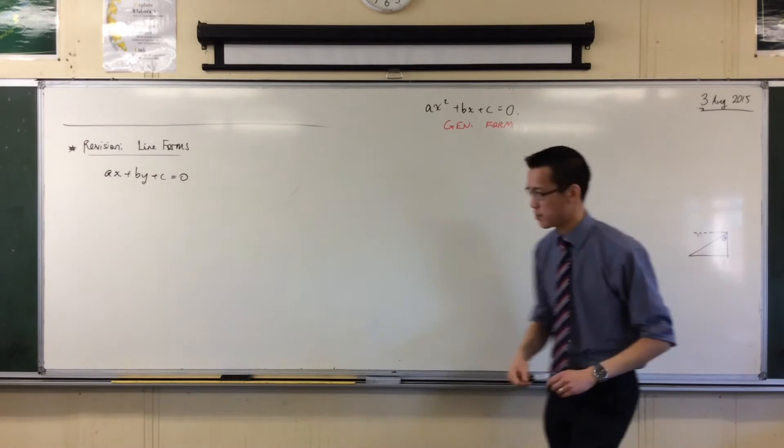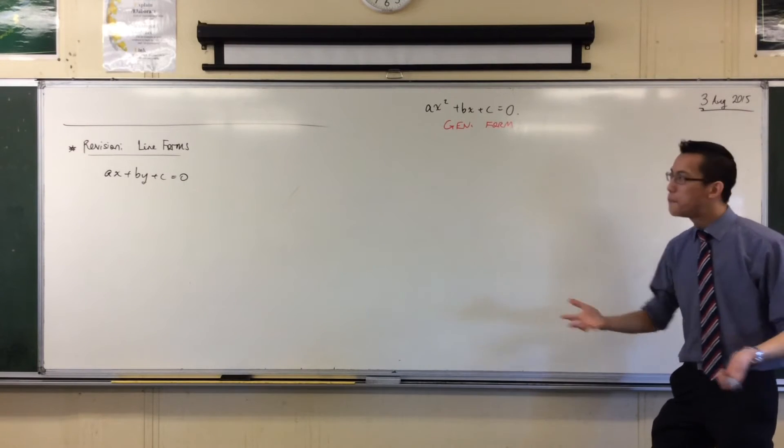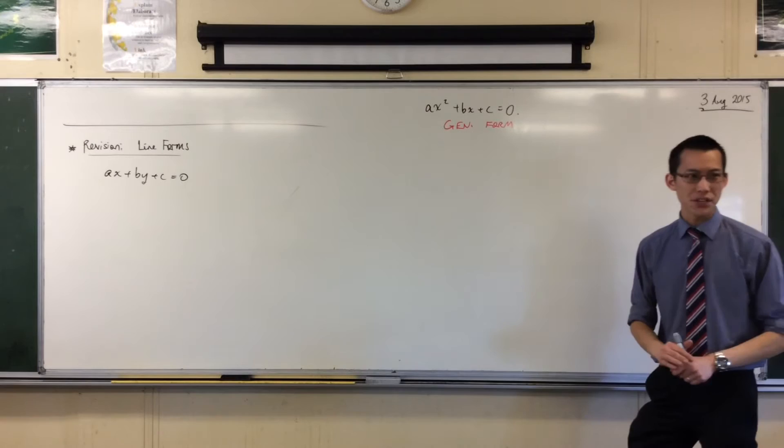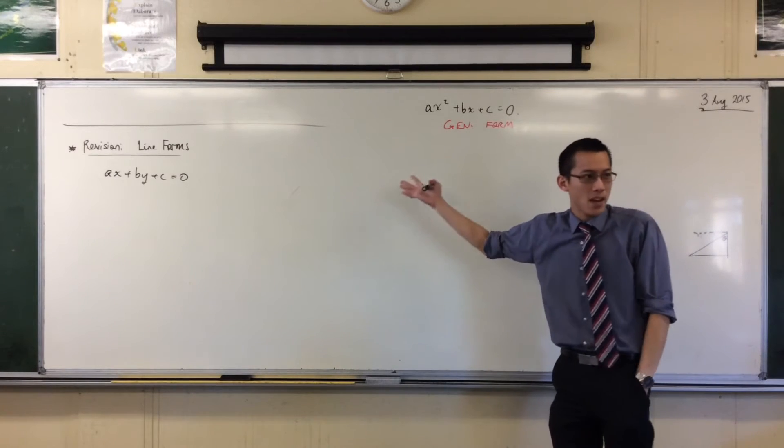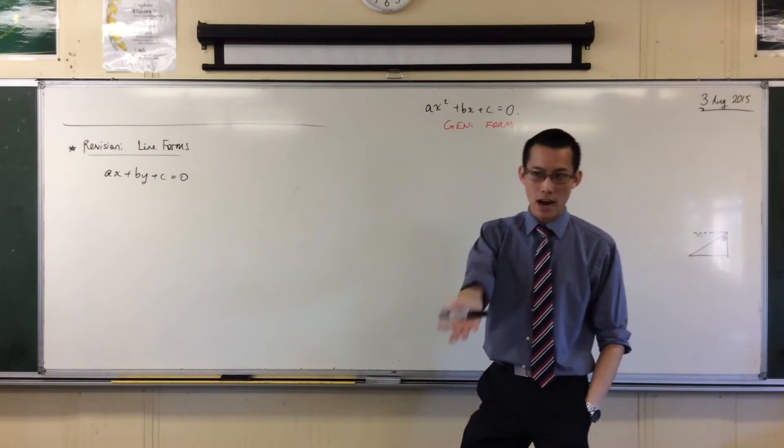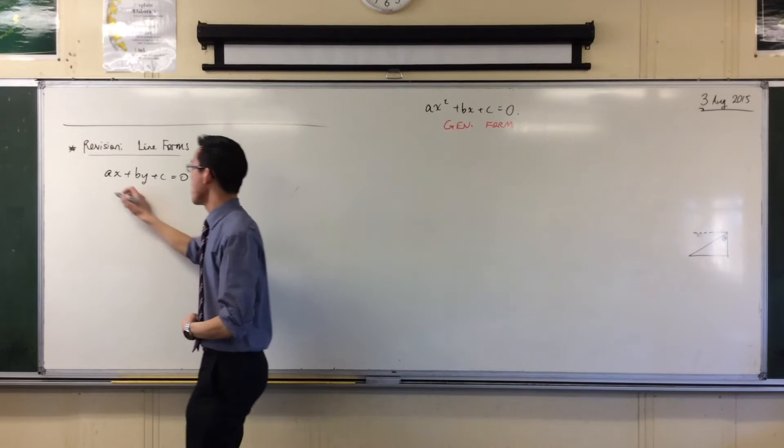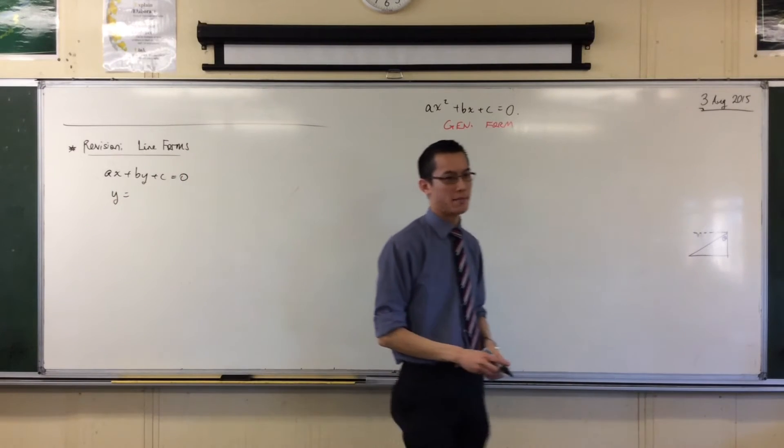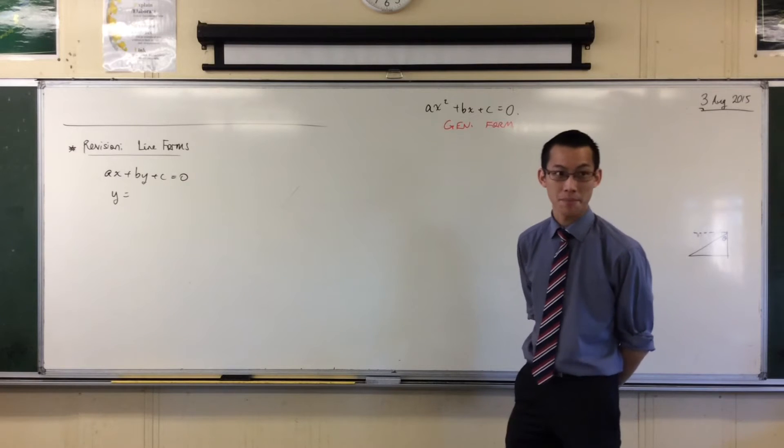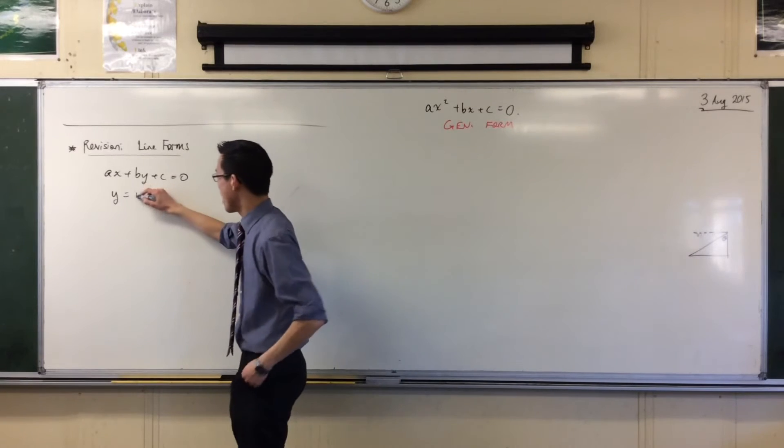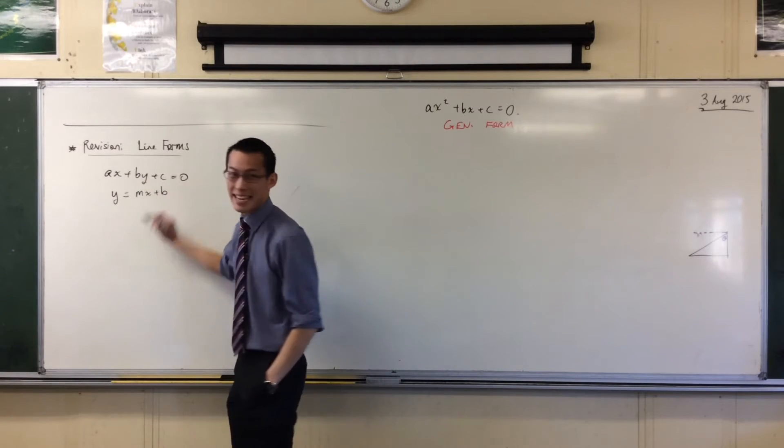It allows us to make a nice, easy comparison between any of the different equations, but it doesn't tell us very much about the straight line, right? Which is why we have all of these other forms. So, for instance, if I did have y equals, what might you expect on the right-hand side? What might be a common thing to see there? MX plus B, yeah. Now, this form has a name.